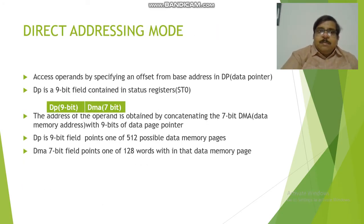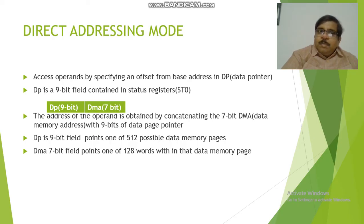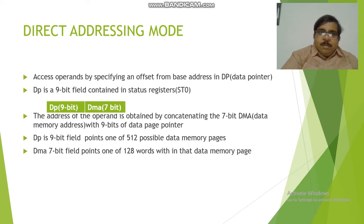In the direct addressing mode, operands are specified as an offset from the base address of the data pointer. The data pointer is a 9-bit field contained in the status register ST0. The address of the operand is formed by concatenating the 7-bit data memory address with the 9-bit data pointer field, covering one of 512 possible data memory pages, with each page containing 128 words.